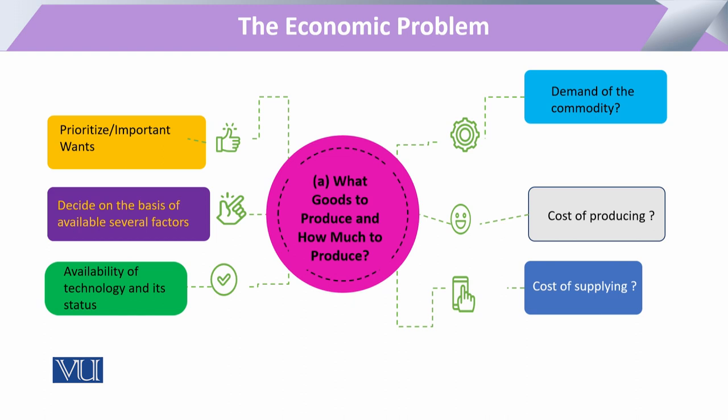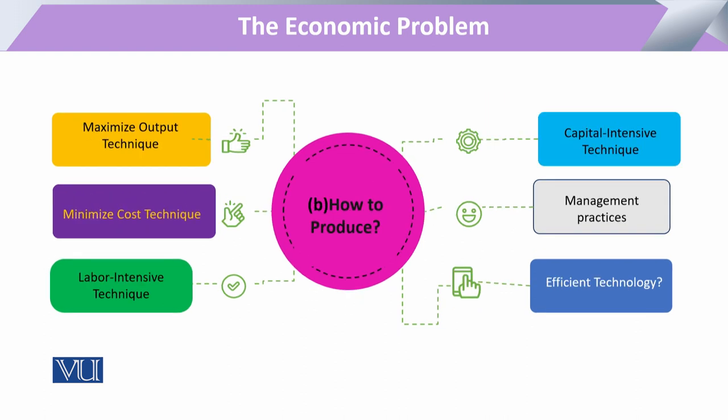How much produce کرنا ہے اس کے لیے market میں موجود demand کا حساب دیکھنا ہوگا۔ دوسرا بڑا economic problem ہے: how to produce۔ یہ technology، technique، اور system سے related ہے۔ کوئی بھی ایک کام مختلف طریقوں سے کیا جا سکتا ہے — جیسے چھاپہ خانہ پہلے ہاتھ سے، پھر مشینوں سے، پھر computerized ہو گیا۔